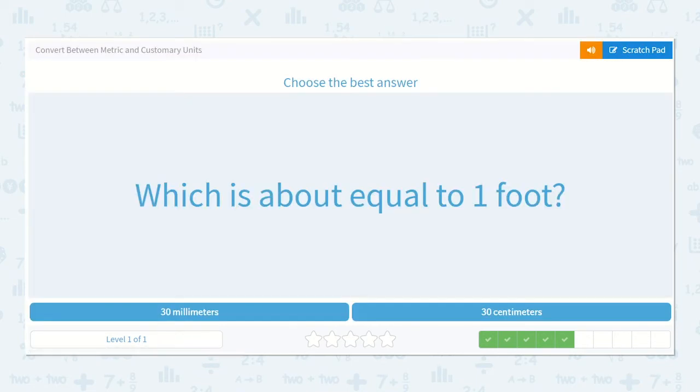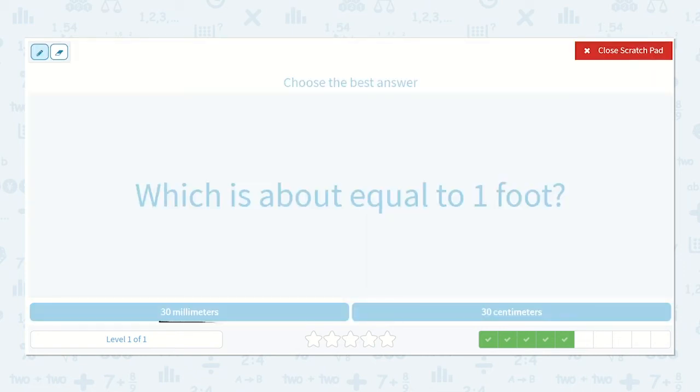Which is about equal to 1 foot? So we have either 30 millimeters or 30 centimeters. Well, I think of a ruler. And I think of how on one side of a ruler, we have 12 inches.